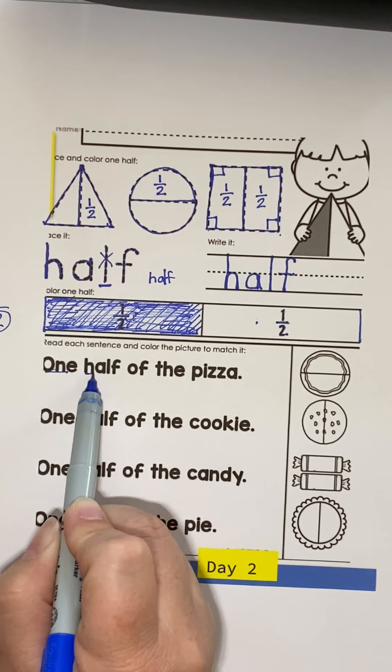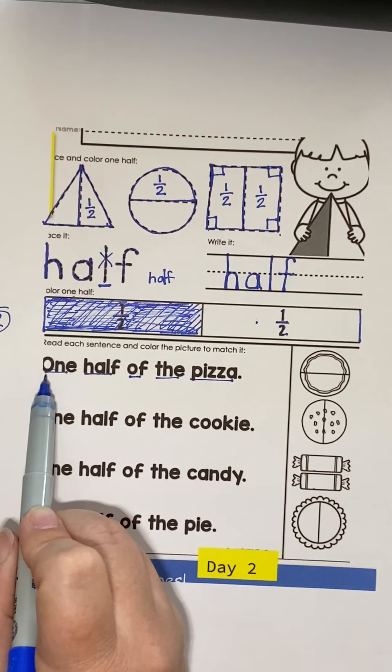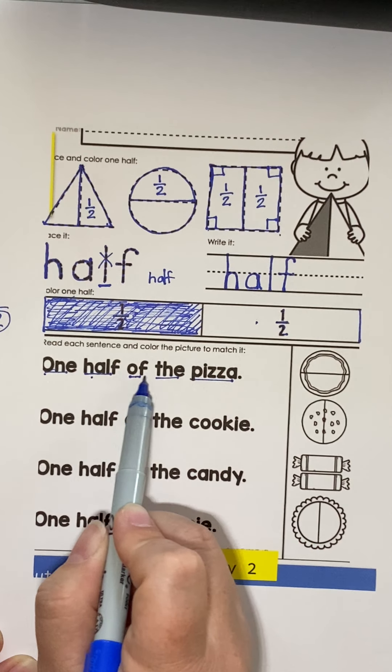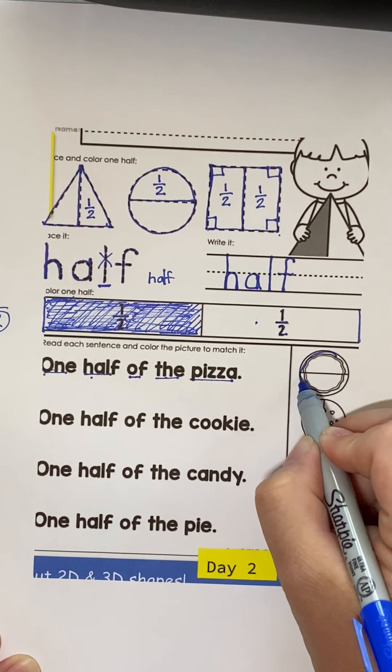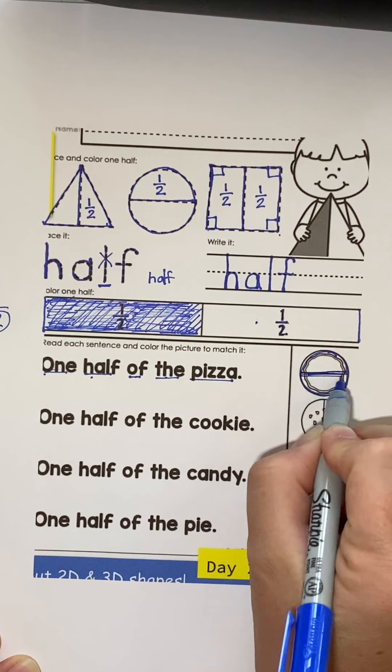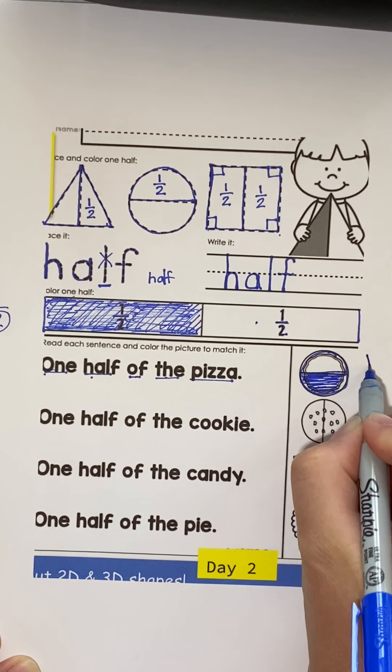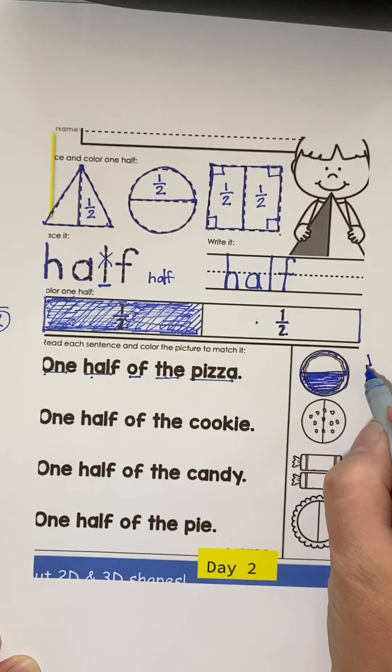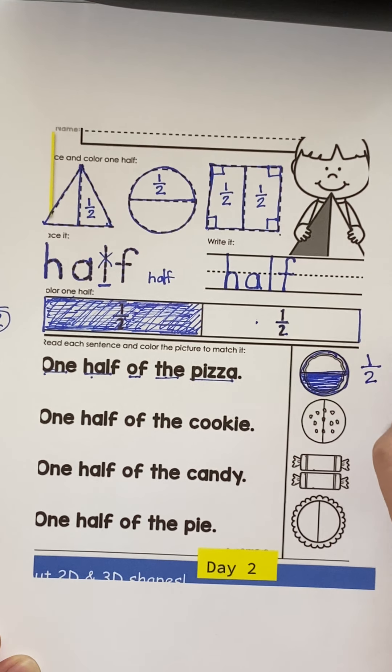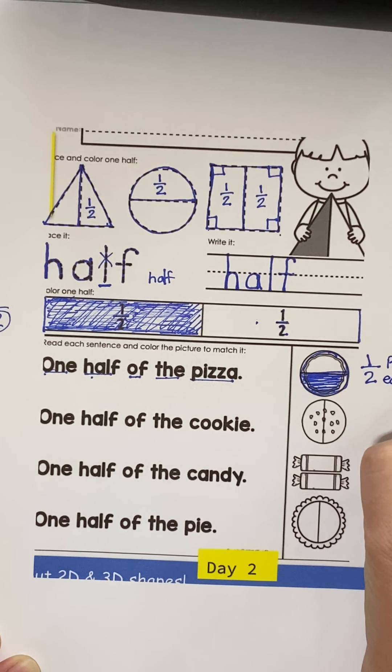Here it says one half of the pizza. Again, one half of the pizza. So, if I make a circle, and I color in one half of the pizza, I'm only coloring in one out of two equal parts. That's one part colored out of two equal parts.